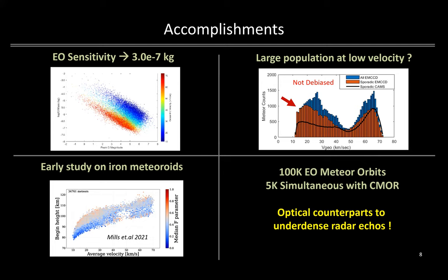In the lower left panel is an excerpt from a study presented earlier this week by Tristan Mills on potential iron meteoroids seen in the EMCCD database by looking at begin height, speed, and light curve F parameter. Potential iron candidates appear in the lower left of the figure and can be traced to asteroid origins. Finally, the system has recorded over 100,000 EO orbits, of which 5% were confirmed to be simultaneous with C-MOR. Thus, we are now in a good statistical sample region to perform simultaneous EO and radar sporadic studies in the near future.